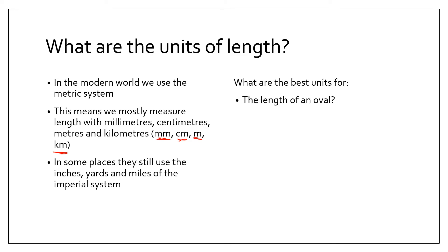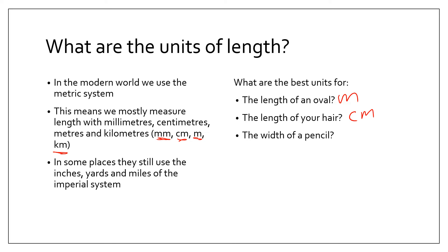What are the best units for the length of an oval? Well, an oval is pretty big so we would probably measure that with meters. The length of your hair is usually in centimeters, but if it's really short it might be in millimeters. The width of your pencil is pretty small so it's probably going to be in millimeters. And the distance from Albany to Perth — we measure that in kilometers. If something's really big, like the distance from Earth to the next star, we'd measure that in light years, but that's a completely different story.